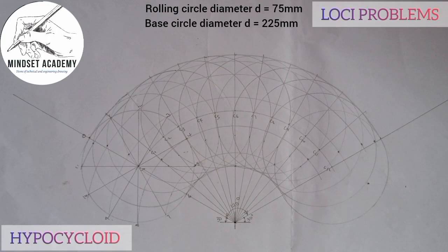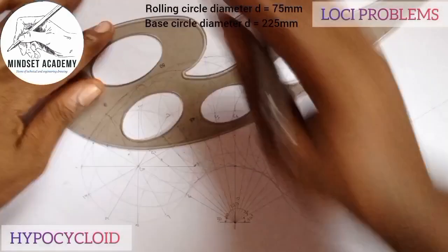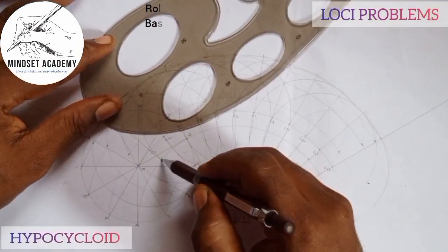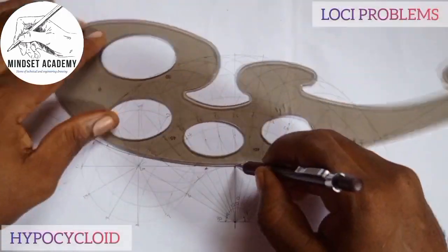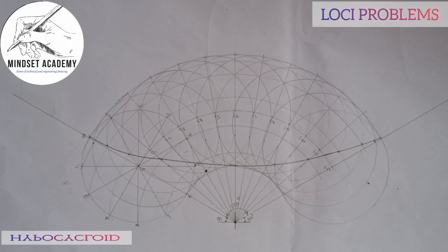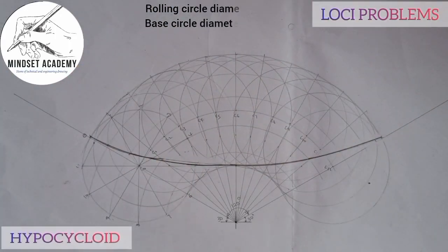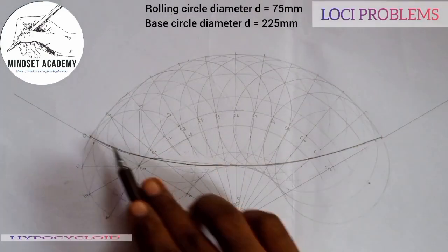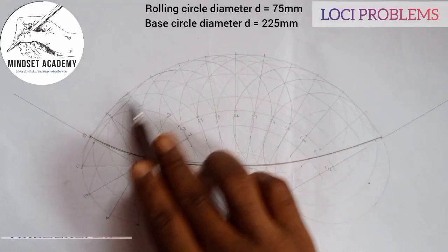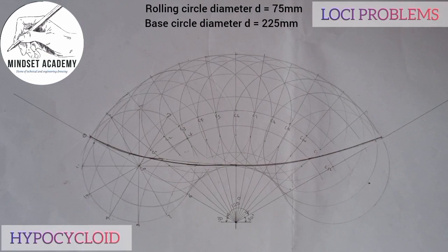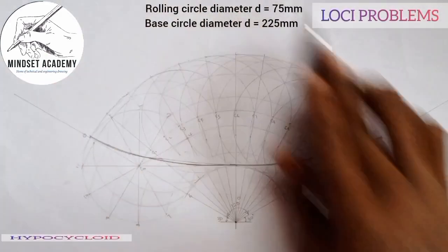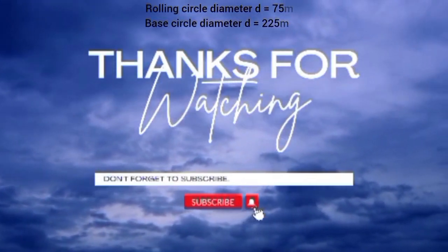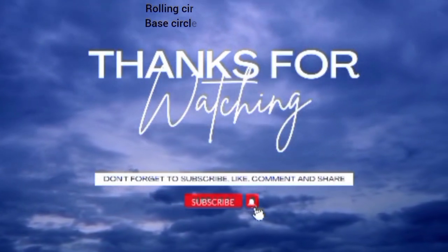I now take my French curve and join all those points together, starting from point zero. This is the completed hypocycloid of the rolling circle. One important thing to understand: in a hypocycloid the rolling circle is always below the base circle, whereas in an epicycloid the rolling circle is always above the base circle. If you found this video helpful, please subscribe, like, comment, and share. Thanks for watching.